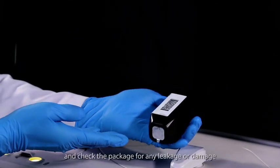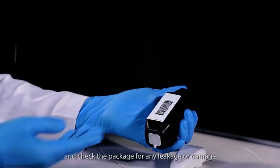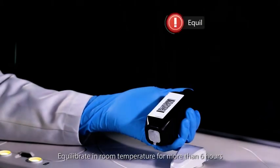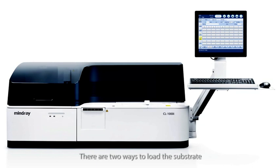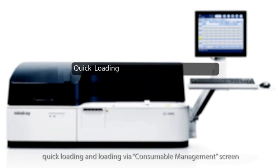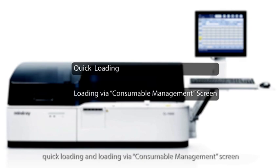Take one bottle of substrate and check the package for any leakage or damage. Equilibrate in room temperature for more than six hours. There are two ways to load the substrate, quick loading and loading via consumable management screen.